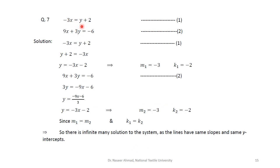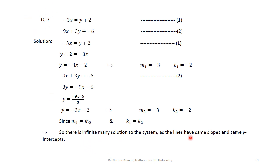For question 7, the first equation written in slope-intercept form gives m1 equals minus 3 and k1 equals minus 2. Equation 2 also gives y equals minus 3x minus 2, so m2 equals minus 3 and k2 equals minus 2. The two slopes are equal and the intercepts are equal, so the lines overlap — giving infinite many solutions.